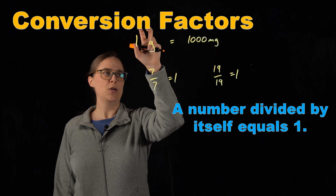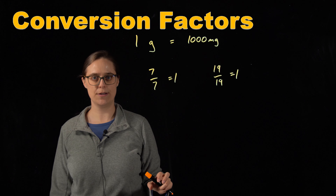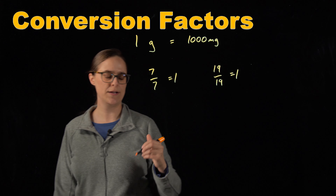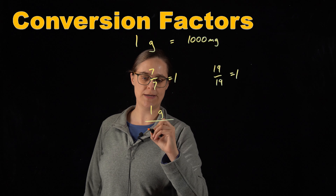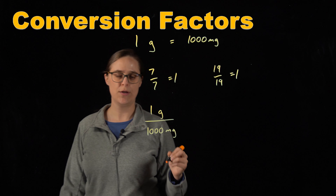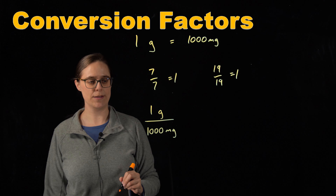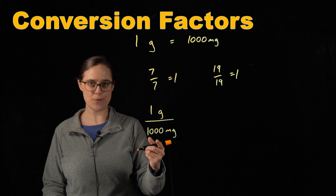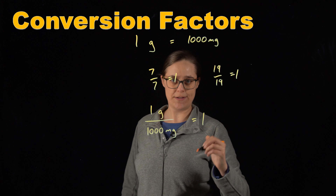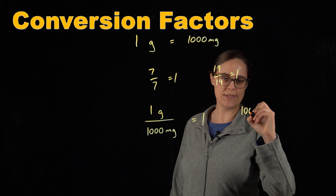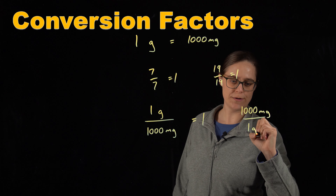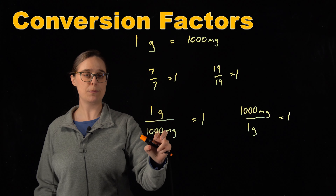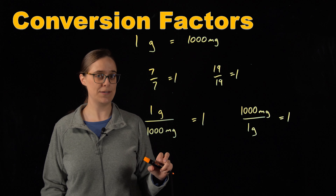In this conversion factor, we have two quantities that are the same as each other. The numbers are different, but the units are different too. So let's set up a fraction with one in the numerator and one in the denominator — so 1 gram divided by 1,000 milligrams. Numerically, this would not equal 1, but conceptually we treat it as equal to 1. I could also flip it: 1,000 milligrams divided by 1 gram is also conceptually equal to 1. These are representing the same quantity, so we can treat them as if they are equal to 1.